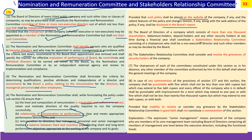A stakeholders relationship committee is formed where the company has more than 1,000 shareholders, debenture holders, and deposit holders. It will have non-executive directors as its members and the chairman may be as decided by the board. Its main purpose is to resolve the grievances of security holders and ensure that the interests of investors and shareholders are looked into with due earnest.